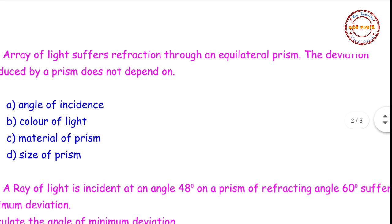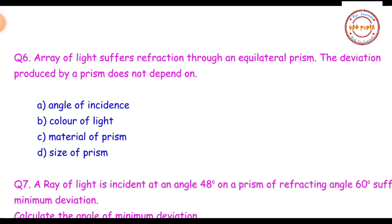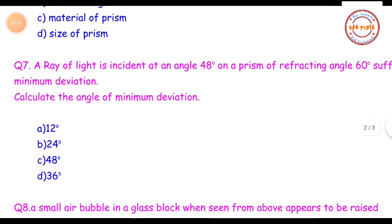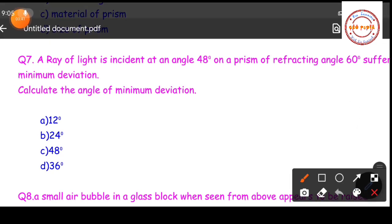Question number six: a ray of light suffers refraction through an equilateral prism. The deviation produced by the prism does not depend on — (A) angle of incidence, (B) color of light, (C) material of prism, or (D) size of prism. The correct answer is D — size of the prism. Deviation does not depend on the size of the prism.